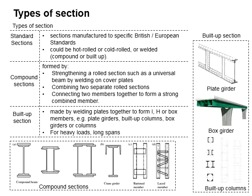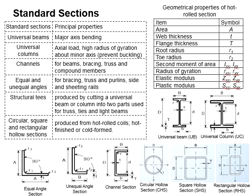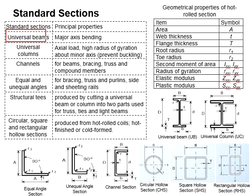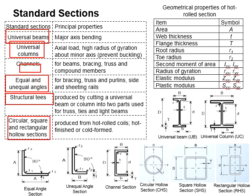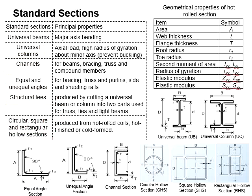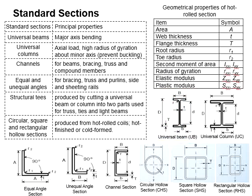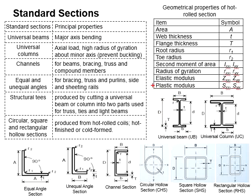Common standard sections include the universal beam, universal column, channel, equal and unequal angle, structural T, and circular, square, and rectangular hollow sections. The universal beam looks like an I-shape section, which is mainly designed to resist major axis bending, and it is suitable to be applied as a beam in a steel structure.